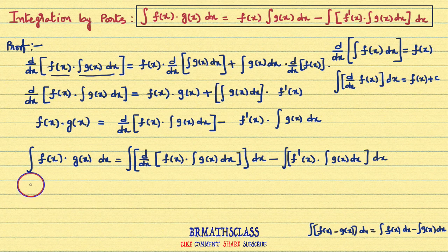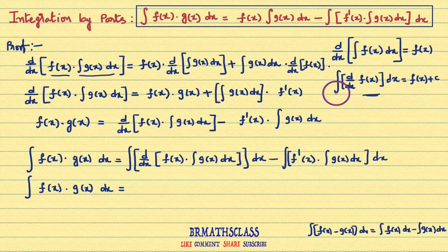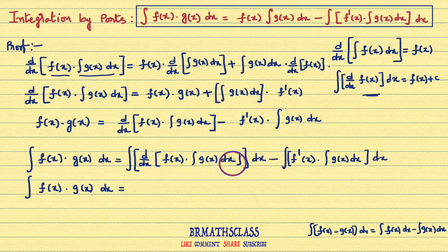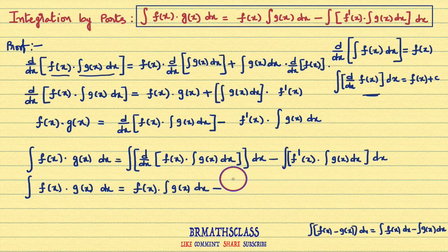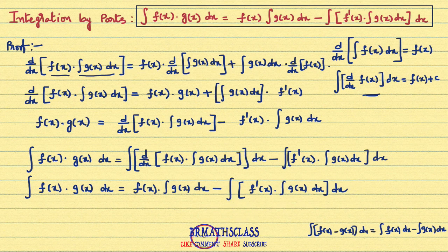So finally, integral of f(x) times g(x) dx equals — here, what is this first expression? By our second formula, integral of derivative of f(x) is f(x) plus c. Here, the integral of the derivative of this whole expression gives back the same thing. So you get: f(x) into integral of g(x) dx, minus integral of f'(x) into integral of g(x) dx. In the next class, I will tell you a trick on how to memorize this integration by parts formula, and we will learn the technique of applying the ILATE rule in integration by parts.